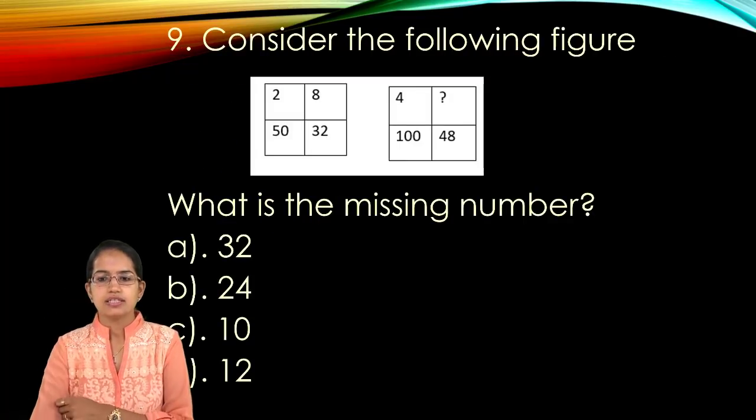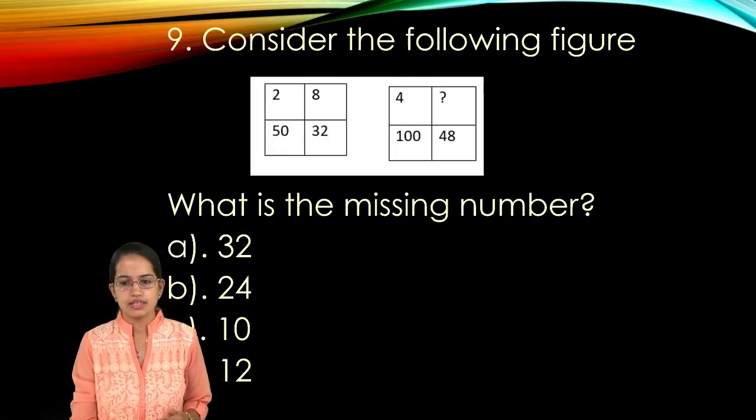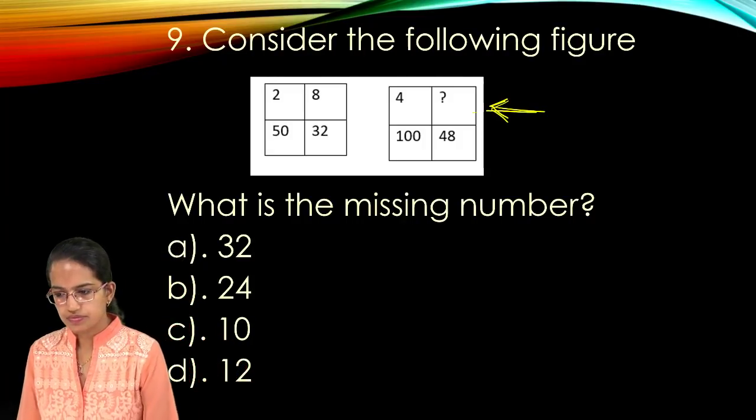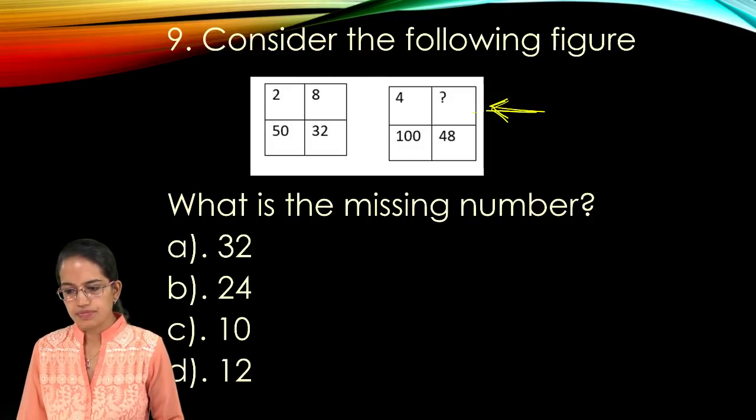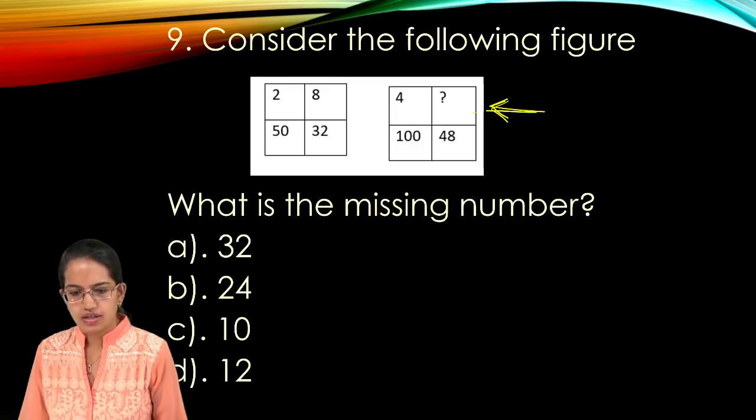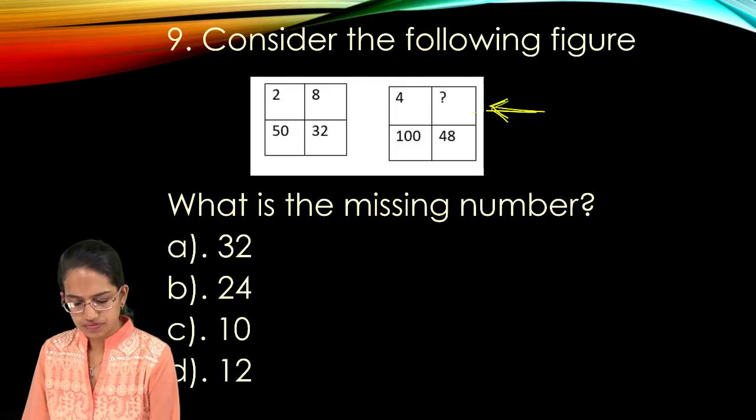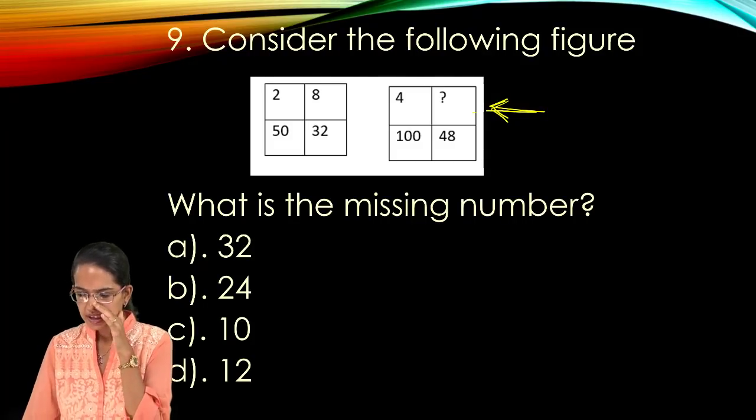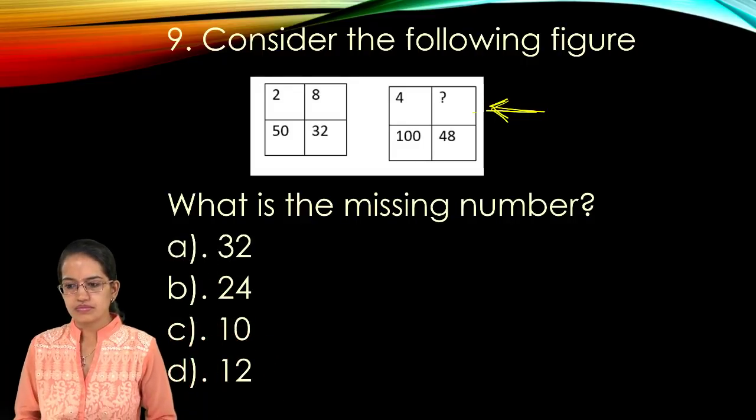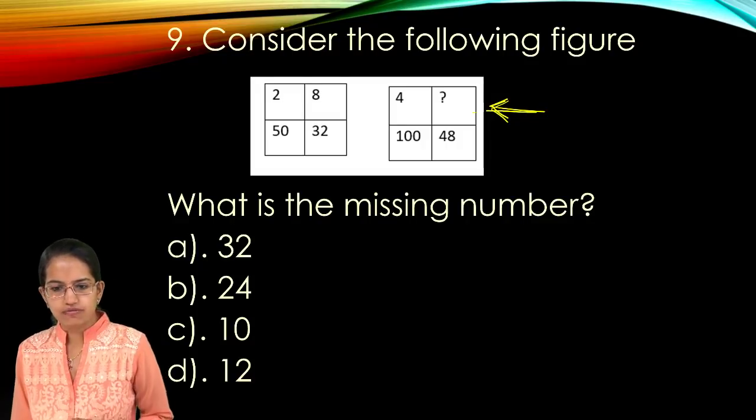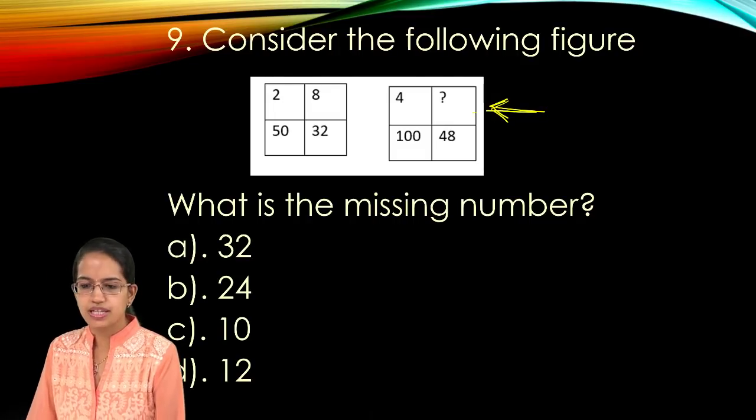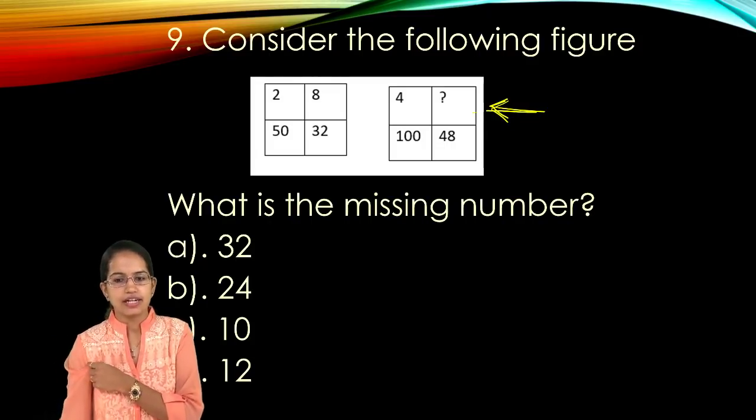The next question here is you have the following figure. What would be the missing number here? How do you calculate in place of question mark what should be there? Question 9 looking for the first correct answer. It's a surprise question. It's indeed a very simple question. Great Puneet, right answer. Now we will understand how this answer has come up.